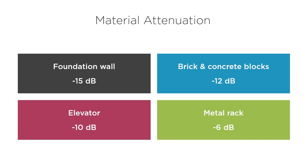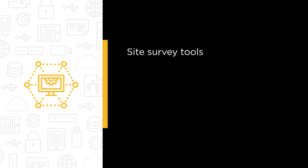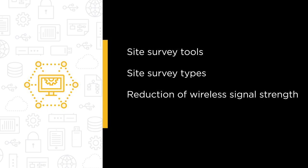Some of the major topics include site survey tools, site survey types such as active, passive, and predictive, reduction of wireless signal strength while it passes through various material types known as material attenuation, and finally the creation of a predictive site survey of a fictional warehouse for Global Mantics.